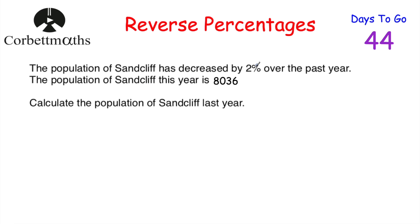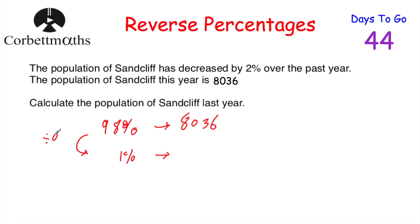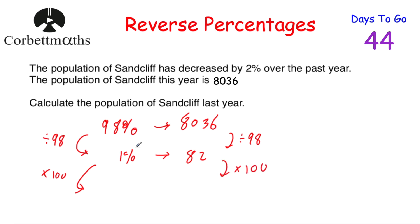If we've decreased by 2%, we're left with 98%. So 98% equals 8,036. To find 1%, we divide both sides by 98. So 8,036 divided by 98 equals 82, meaning 1% is 82. Now multiply by 100 to find 100%: 82 times 100 is 8,200. So the population of Sandcliffe last year was 8,200.